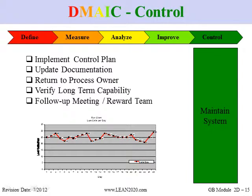During the Control phase, we've implemented changes and they look like they're doing well. This is the time where we're going to turn the process back over to our process owner. We'll have updated procedures and documentation, and people will have been trained to the new procedure. Our implementation control plan will document what should be happening in the process going forward. If we have measurement systems in place, we're going to monitor those for some period of time to see this running in live production and make sure the goals we've attained are maintained.